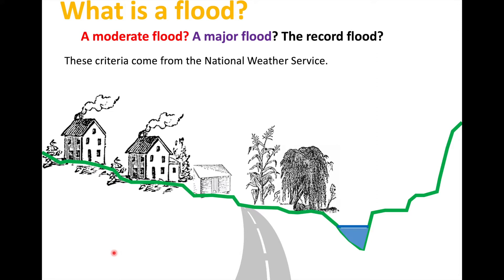What do you suppose the definitions of a moderate flood or a major flood might be? Let's use this little landscape I constructed out of clip art — it's definitely not to scale; corn is not taller than two-story houses. But it shows a typical land use along a stream: floodplain forests, agriculture, roads, structures, and at higher elevations, houses and commercial development.